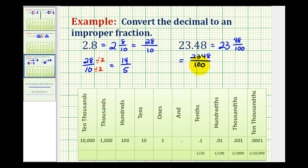And again, just to emphasize the shortcut, we can put this decimal number in the numerator without the decimal point. There's the 2,348, and then we'd have 1 followed by 2 zeros, because we have 2 digits to the right of the decimal point.